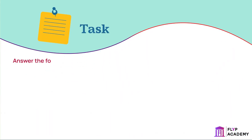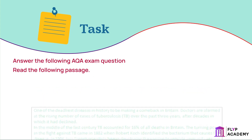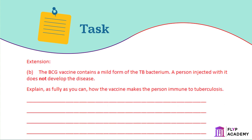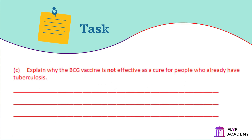Task: Answer the following AQA exam question. A. People infected with a small number of TB bacteria often do not develop the disease. Explain as fully as you can how the body defends itself against the TB bacteria. B. The BCG vaccine contains a mild form of the TB bacterium. A person injected with it does not develop the disease. Explain as fully as you can how the vaccine makes the person immune to tuberculosis. C. Explain why the BCG vaccine is not effective as a cure for people who already have tuberculosis.